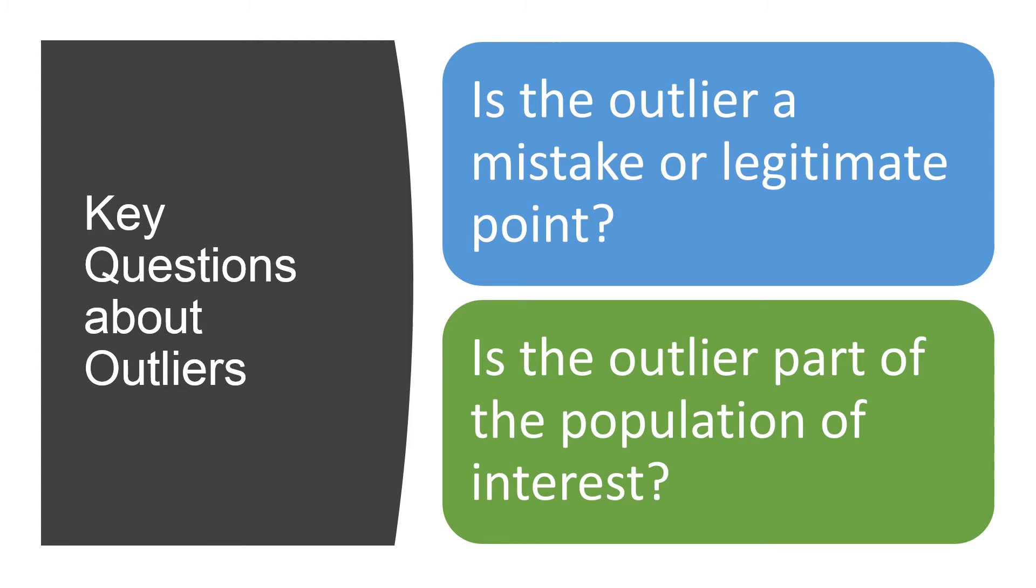The second question is whether the outlier is part of the population of interest. Depending on the answer to this question, we can decide whether outliers should be included in our analysis.